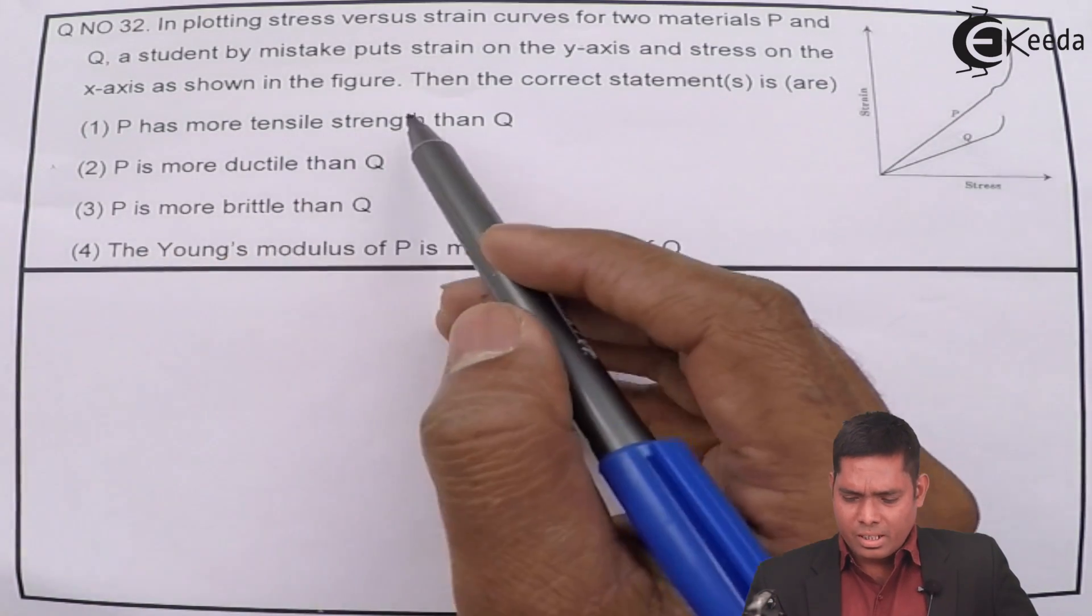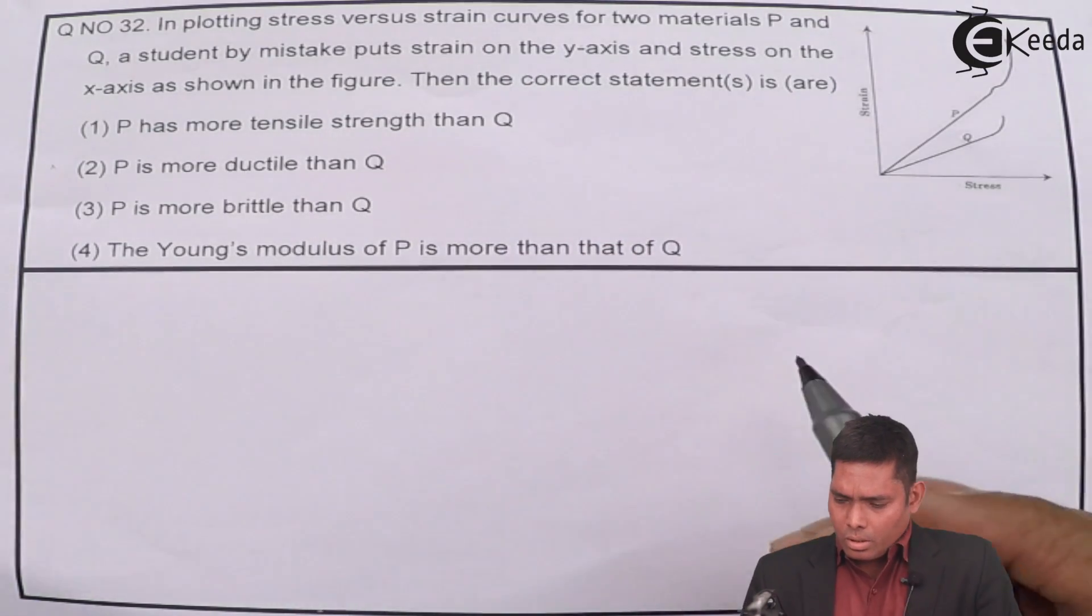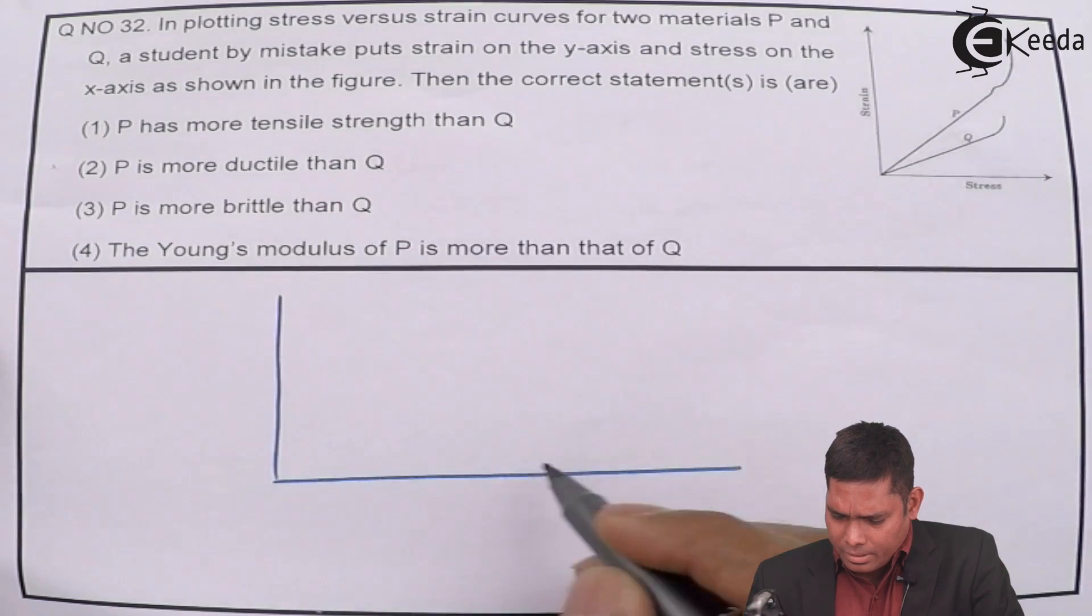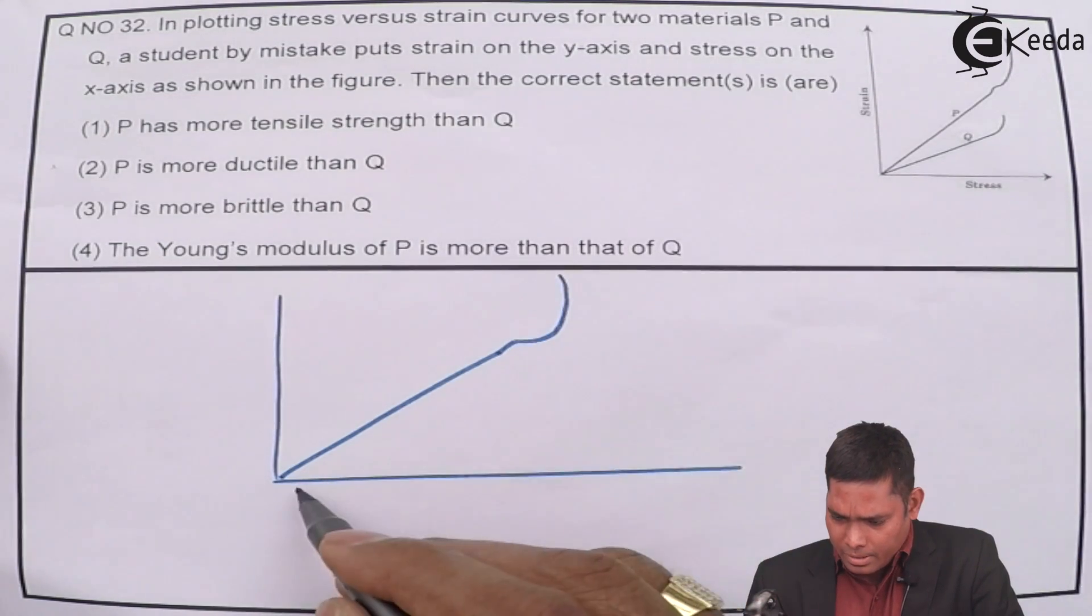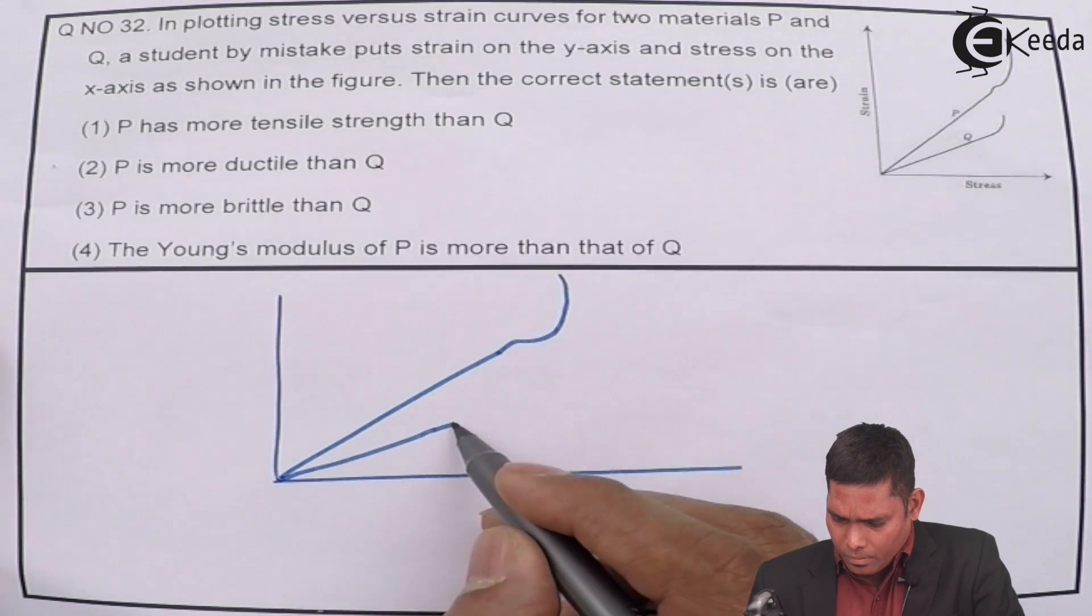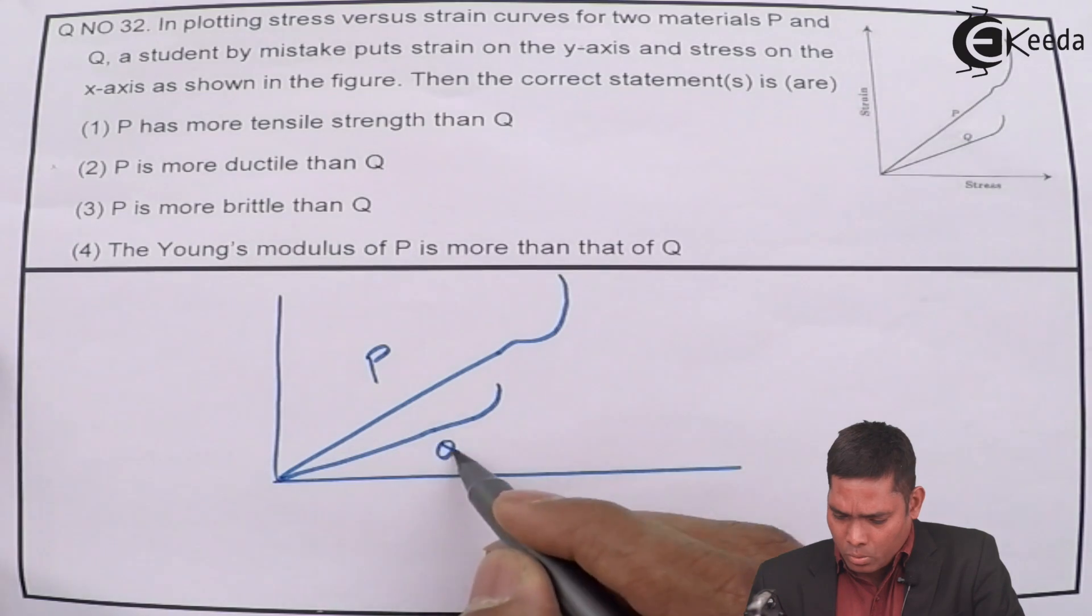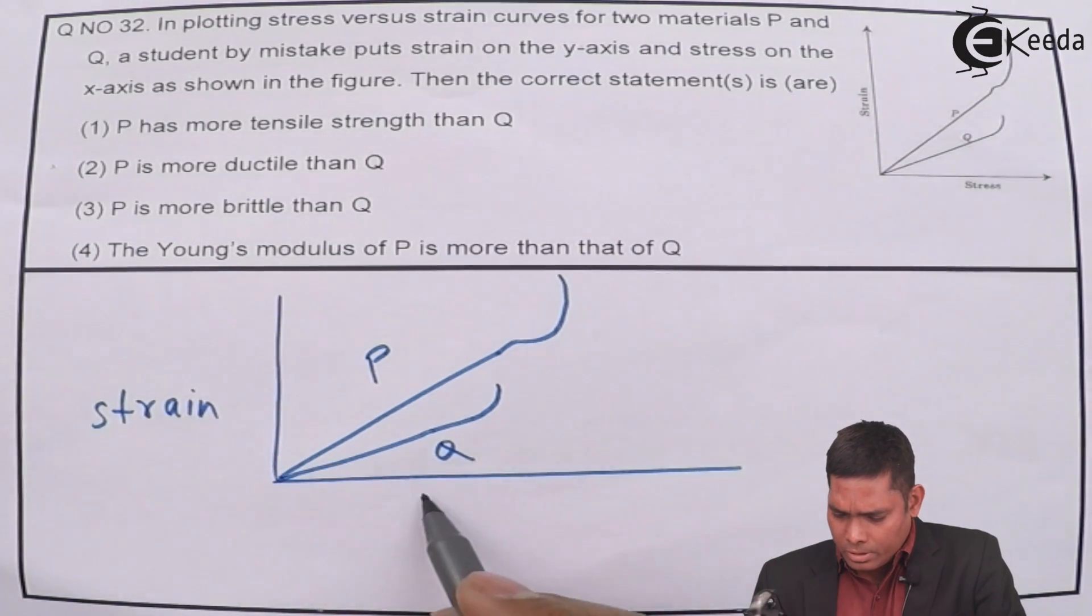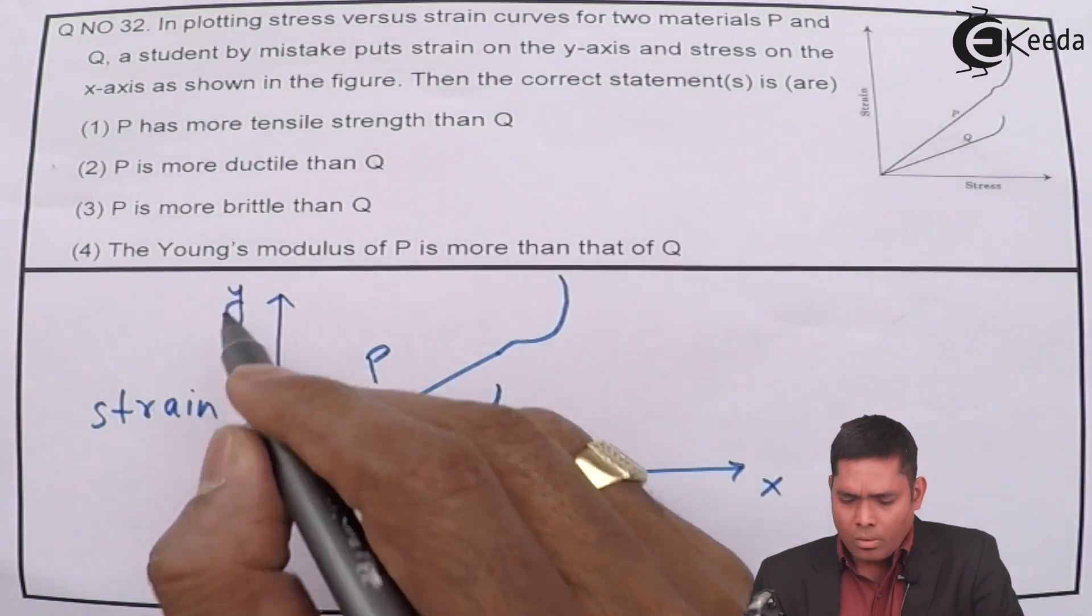P has more tensile strength than Q. You can see that if I have a graph like this, something like that. This is my P, this is my Q. This is strain along y and this is stress along x.